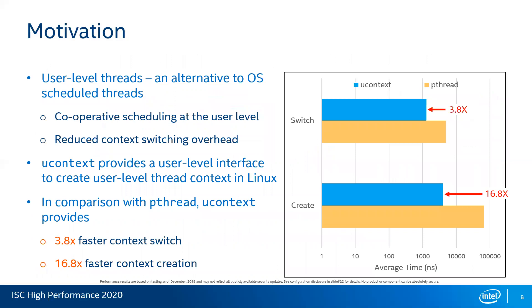We tried to use user-level threads, which is an alternative to OS threads. The primary motivation was to reduce the context switching overhead, because for user-level threads there is no OS involvement — thread maintenance and scheduling all happens in the user space. Linux glibc provides uContext APIs, which is a user-level interface for context creation and switching. We did an experiment comparing uContext and pThread in terms of context switch and context create operations, and uContext performs much better.